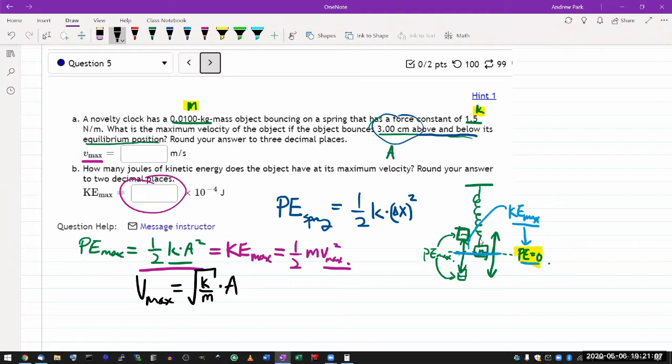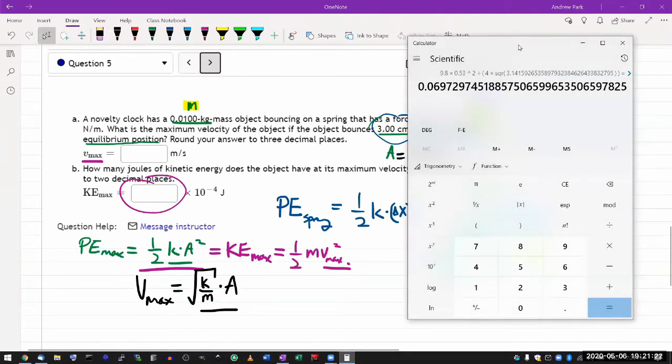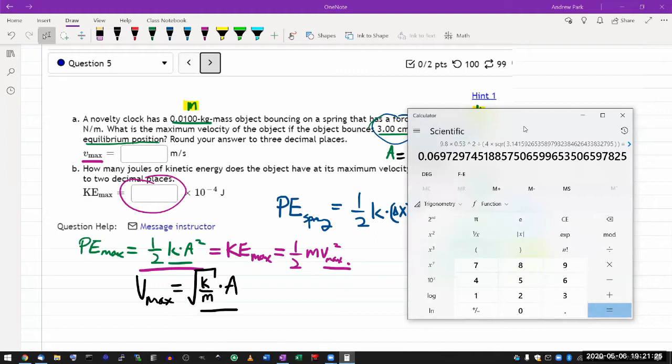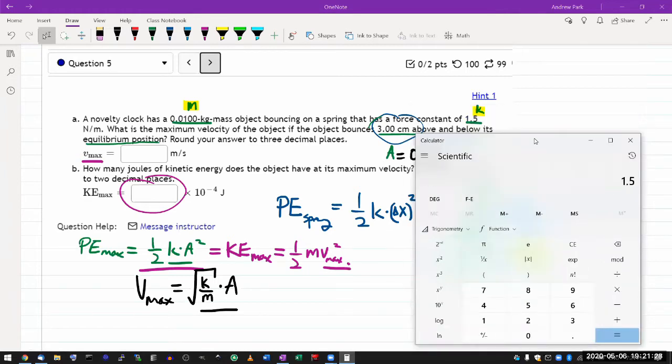So I think I have all the numbers. K and m are - so let me plug in all these numbers in the basic SI units. So A should be 0.03 meters. Let's plug in the numbers. So k of 1.5 divided by mass of 0.01 kilogram, take the square root of that times the amplitude of 0.03 meters. So I get the answer of 0.367 meters per second.